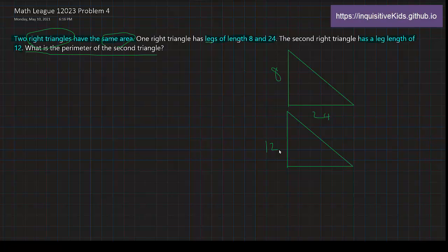Now we're asking for the perimeter of the second triangle. Well, to find the perimeter of the second triangle, we need to know at least one other side. And we can know that by figuring out what goes in this missing part over here. Because then we could use the Pythagorean theorem to figure out this other missing side.